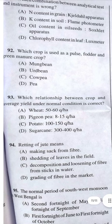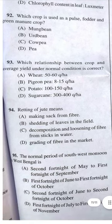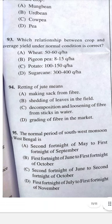Question 94: Retting of jute means C — decomposition and loosening of fiber from the stalk in water.